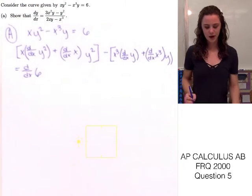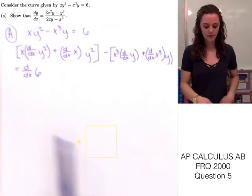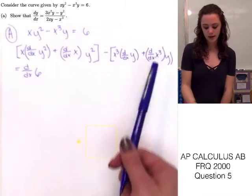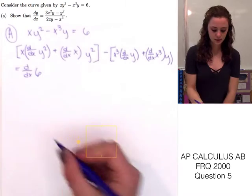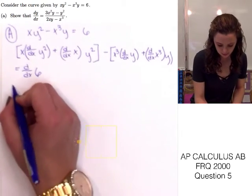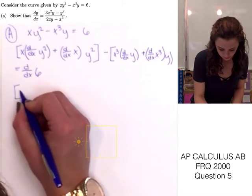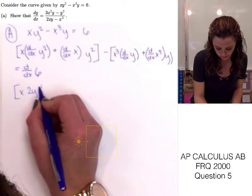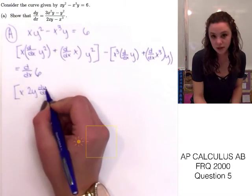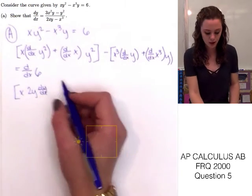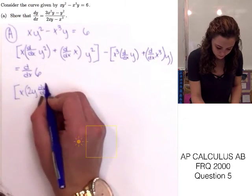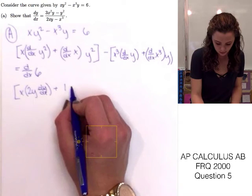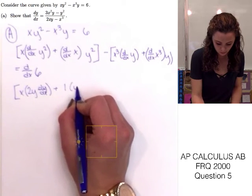We need to find the derivative of y², x, y, and x³. For the first term, we get x times 2y dy/dx, since we're finding the derivative of y, plus the derivative of x which is just 1 times y².